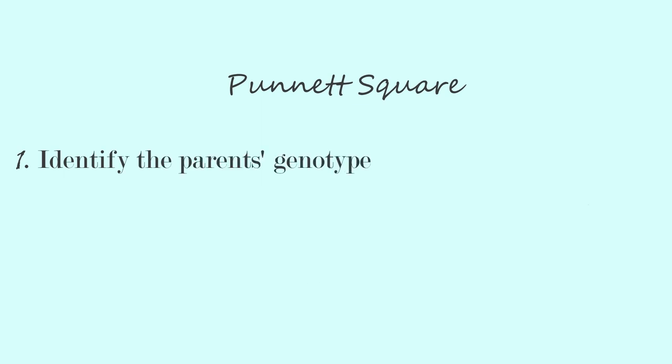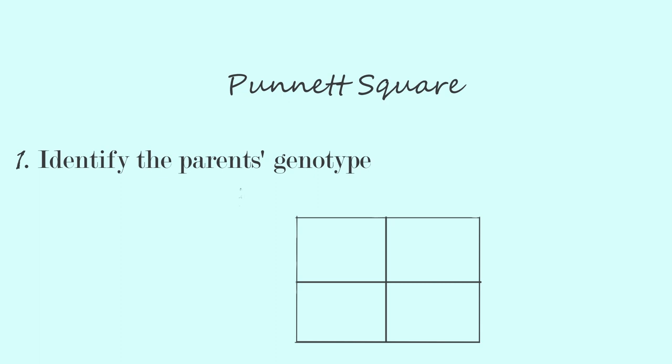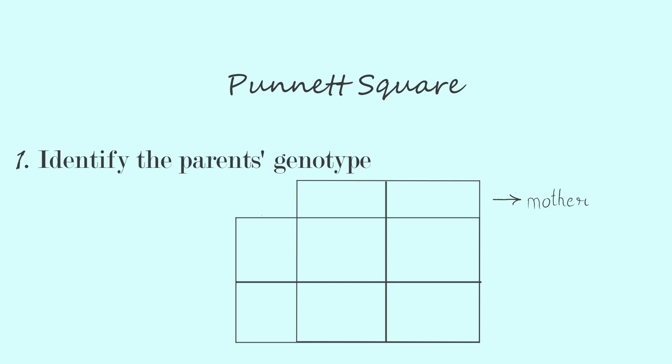Punnett squares can calculate the probability of offspring inheriting a specific trait based on the parents' genotype. To do this, we first need to identify the parents' genotypes by looking at the pedigree chart and determining whether they are affected by the trait, carriers of the trait, or unaffected. Once we know the parents' genotypes, we can create a Punnett square to show all possible genotypes of the offspring. The Punnett square is divided into four boxes, each representing a possible offspring genotype. The two top boxes represent the genotype of the mother, and the left two boxes represent the genotype of the father. The four smaller boxes in the middle represent all the possible genotypes for the offspring.